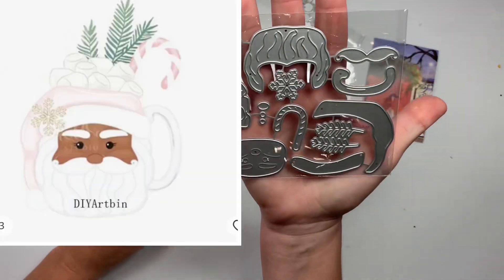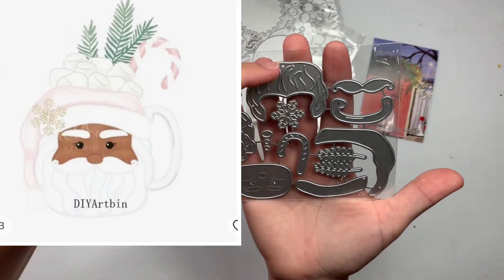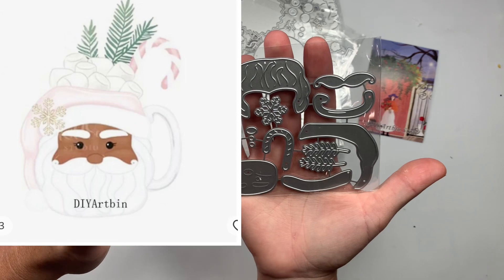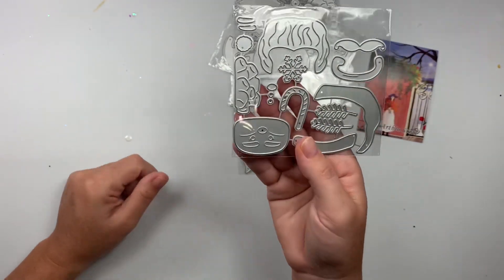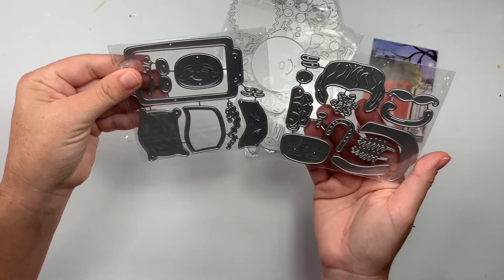And then this one is a Santa. You can see here's his face, his beard. It's probably a cup. Marshmallows, snowflake, candy cane. I'll insert photos for all of these.